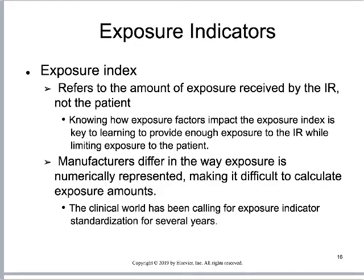Changing gears, one significant technical consideration with digital images is that we cannot look at the image and determine whether the exposure was appropriate. We need to rely on the computer to tell us what the exposure level was — that's what we mean by exposure indicators. Exposure indexes are the amounts of exposure received by the image receptor, not necessarily to the patient. It's the latent beam exiting the patient and exposing the image receptor. Knowing how these exposure factors work is key to providing sufficient exposure to create a diagnostic image.